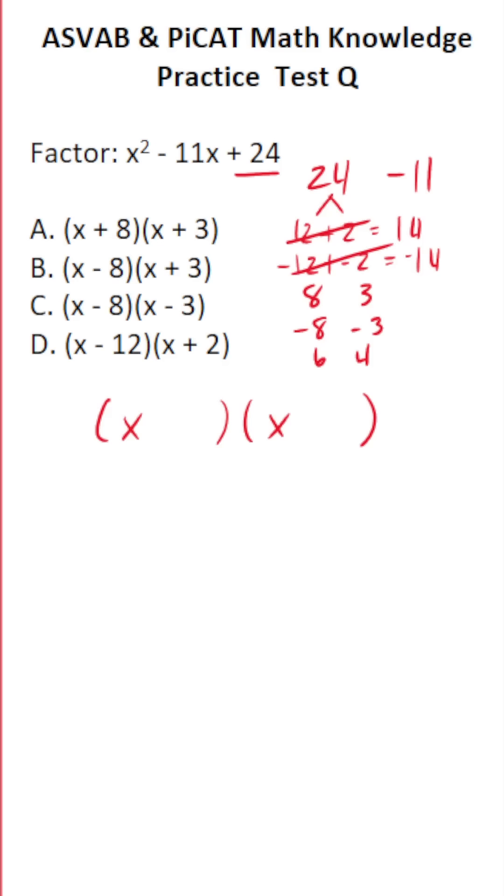8 times 3 is 24. 8 plus 3 is 11. We want negative 11, not positive 11, so these won't work. Negative 8 times negative 3 is 24. A negative times a negative is a positive. Negative 8 plus negative 3 is negative 11.